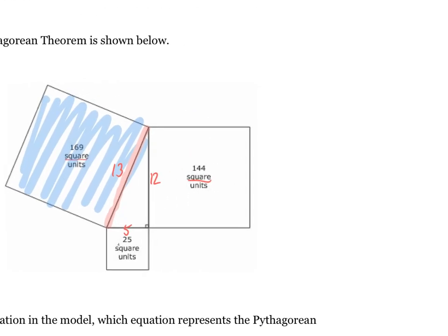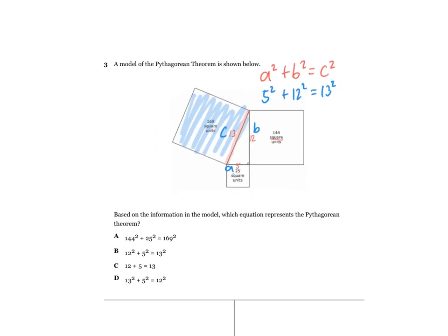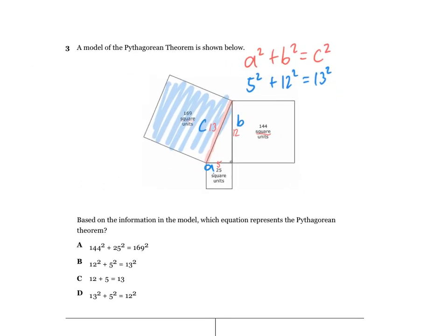The Pythagorean theorem is a squared plus b squared equals c squared. I'm going to call the sides a, b, and c, and start plugging in numbers. So a is 5 squared, b is 12 squared, and c ends up being 13 squared. You're going to try to figure out between the answer choices which one matches this equation.